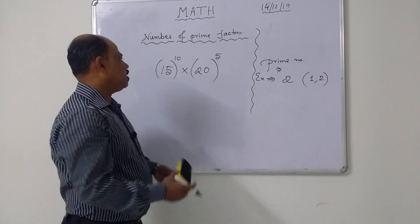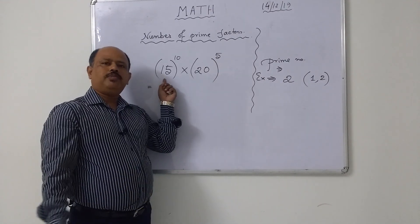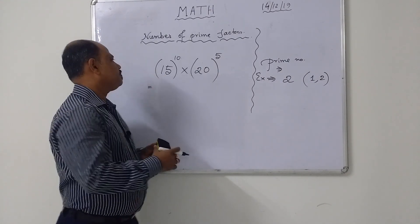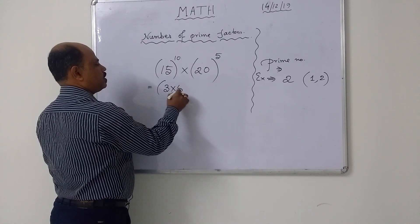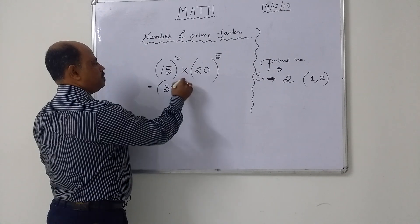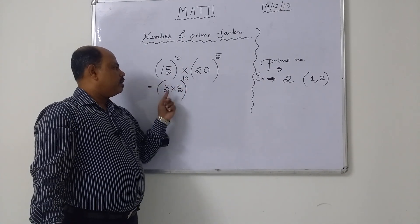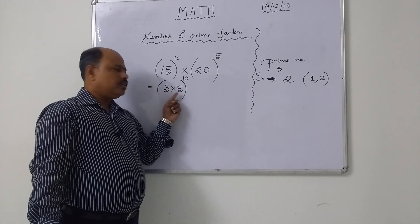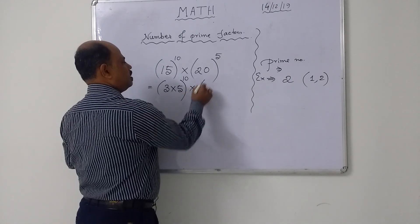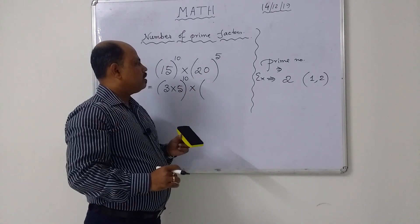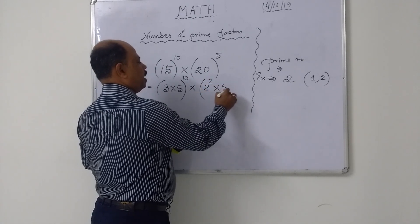But you see that 15 is not a prime number. You can write 15 as 3 into 5, and the power is 10. Both 3 and 5 are prime numbers. And 20 — look at 20.